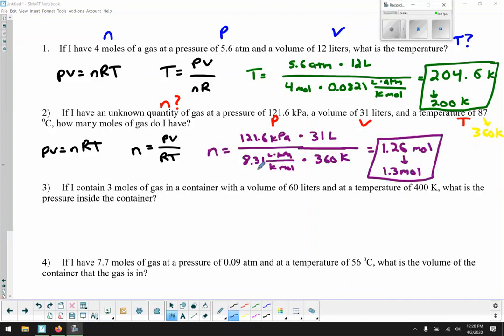So I've put the math together, 121.6 kilopascals times 31 liters divided by 8.31 liter kilopascals per Kelvin mole. So that's the R value I use, times 360 kelvins, again, in Kelvin. Do all the math, you get 1.26 moles. And since I only have two sig figs in 31 liters, I'm limited to two sig figs. So I round to 1.3 moles. So that's number two.